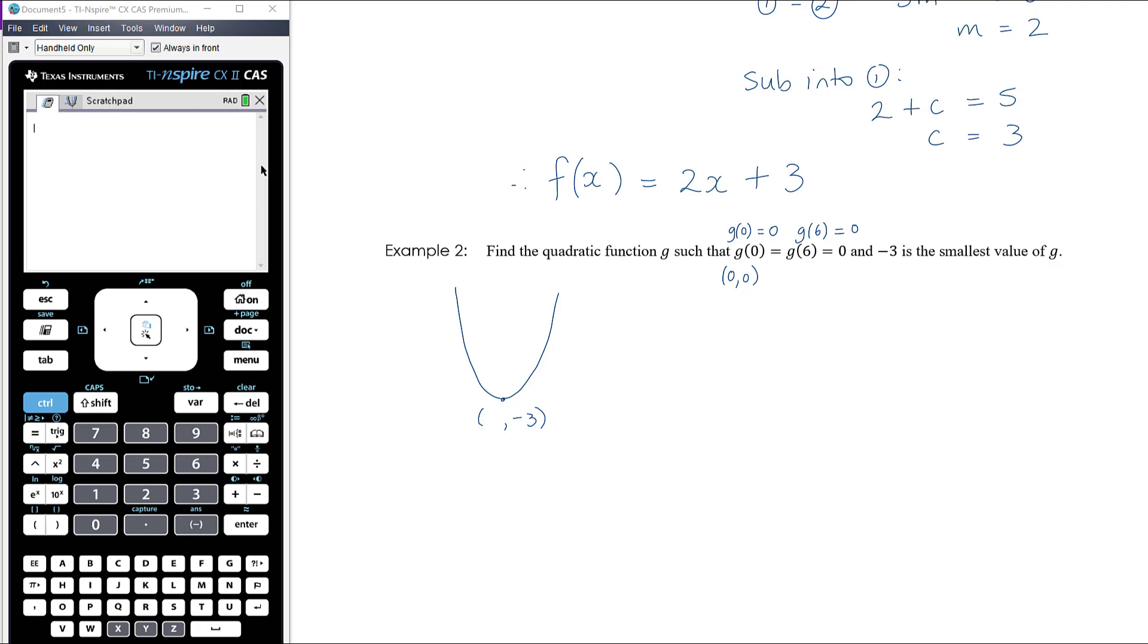So g(0) equals 0 tells us the graph goes through the point (0,0). So they're x-intercepts. We know it goes through the origin and we know it goes through the point (6,0). So actually we also now know the x-coordinate of the turning point. We know the turning point is at (3,-3). So we've got more than enough information to find this equation.